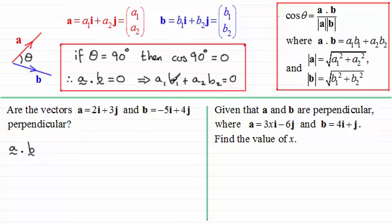And by this result here it should equal 0. So we've got 2 times minus 5. I'll show the working rather than just saying that that's minus 10. And then to this I add 3 times the 4.